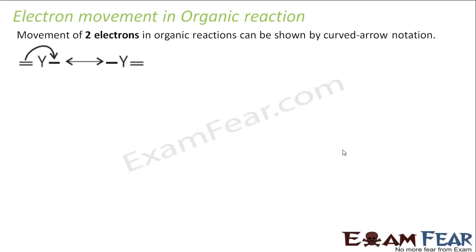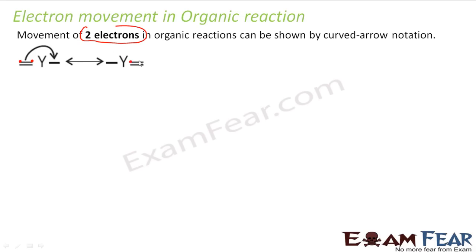The movement of two electrons can be shown by a curved arrow notation. Please note: two electrons. For example, there are two electrons forming a pi bond, and when you draw this arrow, it means two electrons are going to this carbon. If there is a bond here, these two electrons move from here to here.